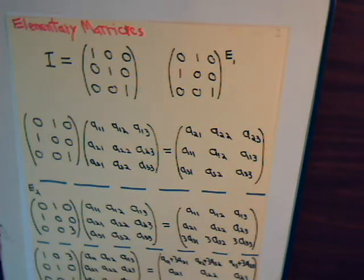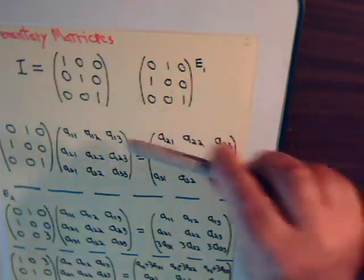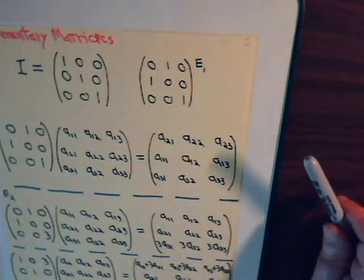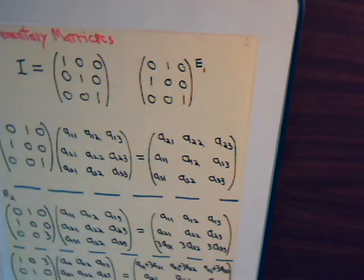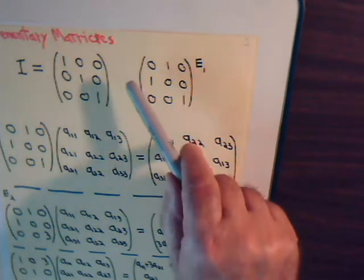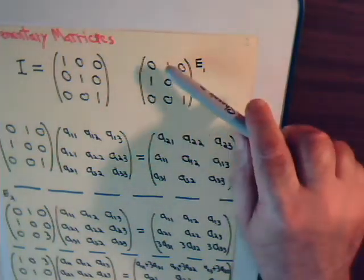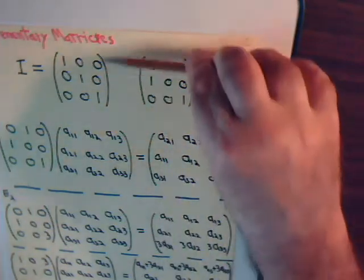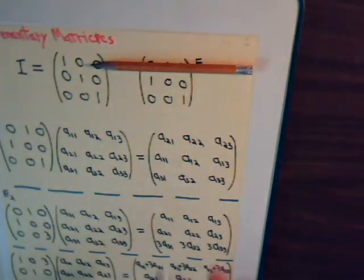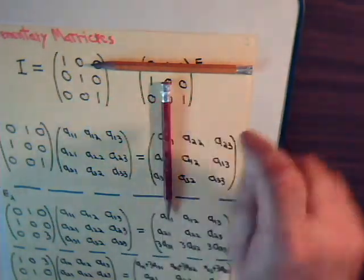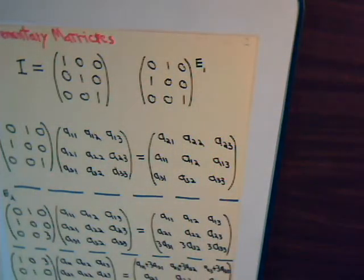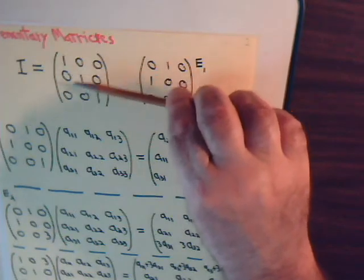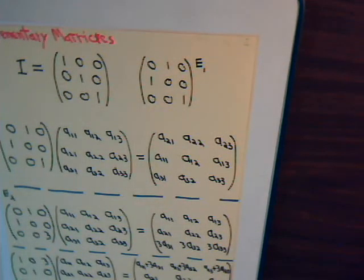For this elementary matrix where we interchanged the first row and the second row, the determinant is going to be negative one. Looking at the top row and doing cofactor expansion, we have zero, then negative one times the sub-determinant of the two-by-two submatrix — covering up the first row and the column — giving one times one times negative one. Any type-one elementary matrix where you reverse any two rows will always come out with a value of negative one.